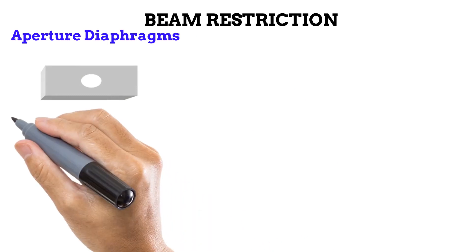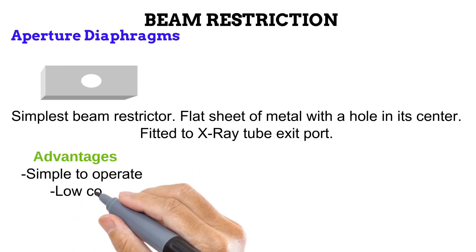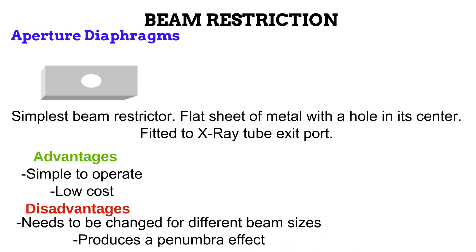First, the aperture diaphragm. This is the simplest beam restrictor on the market. It is made of a flat sheet of metal such as lead, and it has a hole in its center. It is attached to the exit port of the X-ray tube. The wide beam of photons coming from the X-ray tube will be absorbed by the lead, and it is only at the center hole of the diaphragm that photons will pass through. This means that the wide beam coming from the X-ray tube is reduced to a narrow beam by the diaphragm. The advantages are that it is not complicated to attach and detach, and that it is less expensive. However, because it cannot be adjusted, multiple aperture diaphragms need to be purchased for different intended beam sizes. Also, aperture diaphragms produce geometric unsharpness in the form of the penumbra effect.